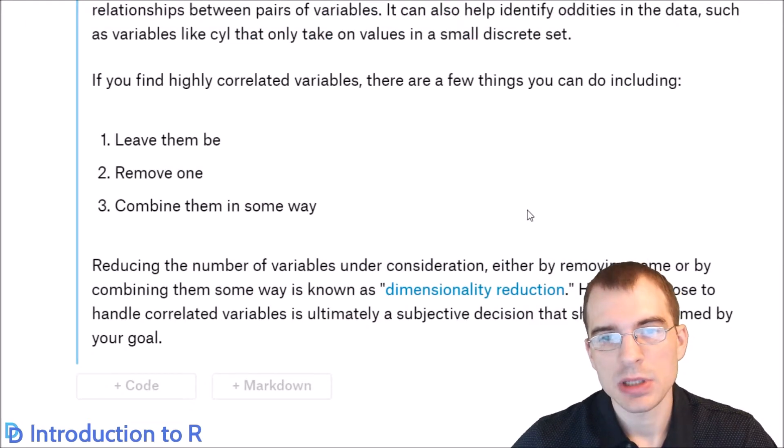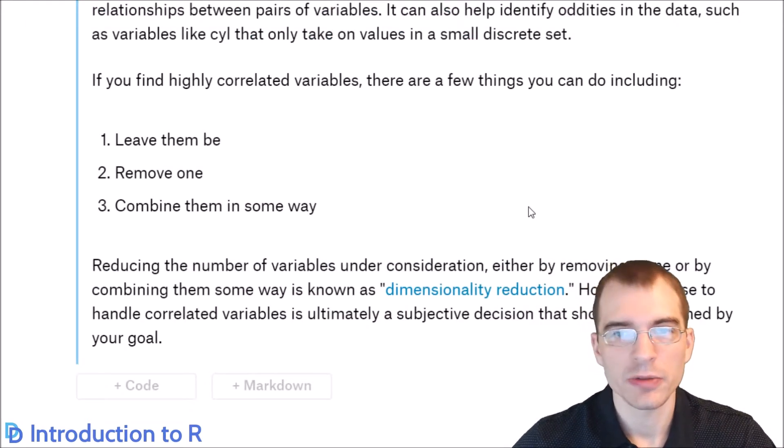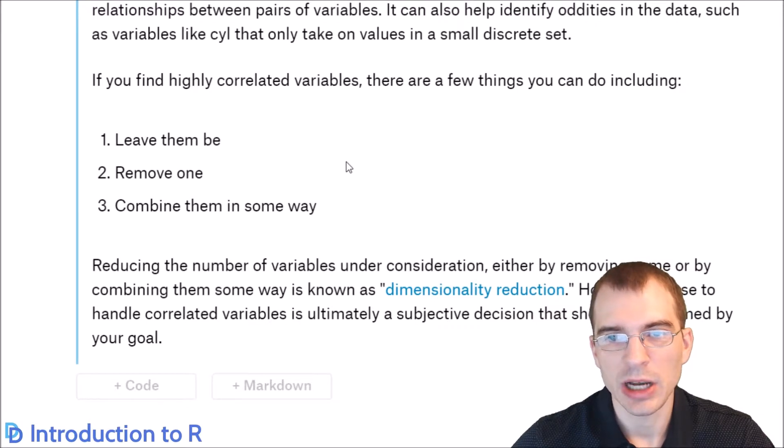Three basic options to consider when you have highly correlated variables: you can just leave them be. That's always an option, even if you happen to notice them. Certain analyses and modeling techniques aren't affected too much by things being highly correlated. You could instead remove some of the highly correlated variables. That can be helpful both by improving modeling and also it reduces the size of the data, so that can yield benefits in terms of memory and how long algorithms take to run on the dataset.